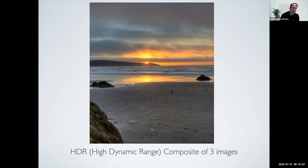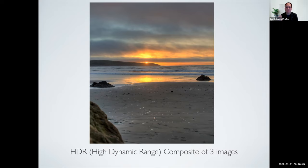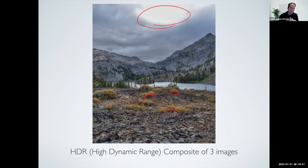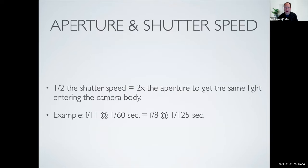Here are a couple examples of what high dynamic range images accomplish. A perfect example you've probably experienced: when you try to take a picture of a sunset, it never quite turns out exactly the way you think it should, because it's either underexposed or overexposed. We really need something more dynamic to completely capture what this image would look like. Another example on a cloudy day shows proper exposure of the dark areas in the bushes while also getting proper exposure of the clouds in the sky. We'll spend a lot more time discussing this going forward.